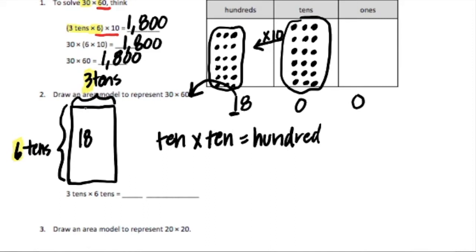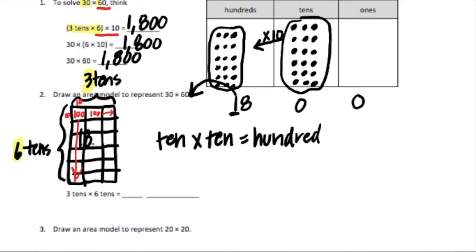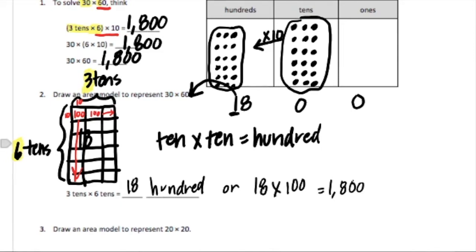If I broke this up into three by six, each of these tiny sections is ten on each side, so that means each of these spaces is one hundred. All of this is one hundred. So that would be eighteen one-hundred times, or eighteen hundreds — eighteen times one hundred. All of it equals eighteen hundred, or one thousand eight hundred.